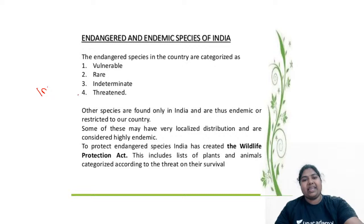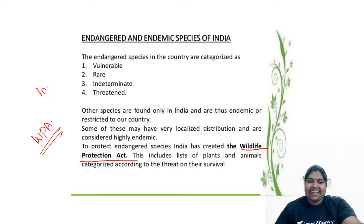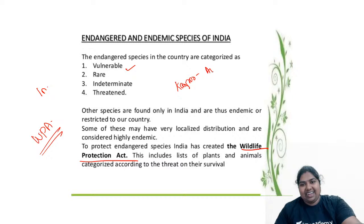In India, we have a special act called the Wildlife Protection Act (WPA). You cannot simply enter a forest — you have to get permission from the collector. The endangered species in India are categorized as vulnerable. For example, kangaroos are present only in Australia — they are endemic to that region. Similarly, India also has many endemic species.